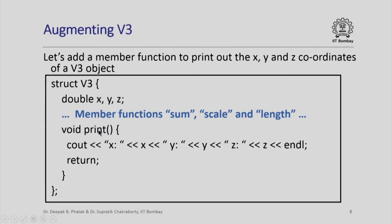Why are we doing this? By adding a member function called print, which simply prints out the x, y, and z values of an object of type V3, we are saying that we do not need to access the members x, y, and z of a V3 object directly in order to print their values. We can simply use this member function, which acts as an interface to access and print the values of different members of an object without directly accessing those members from the program. We have added this simple print function as a member function of the structure V3.